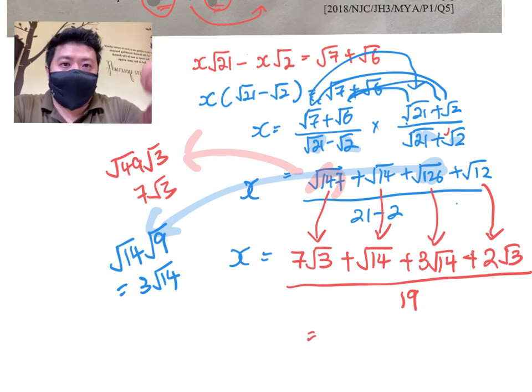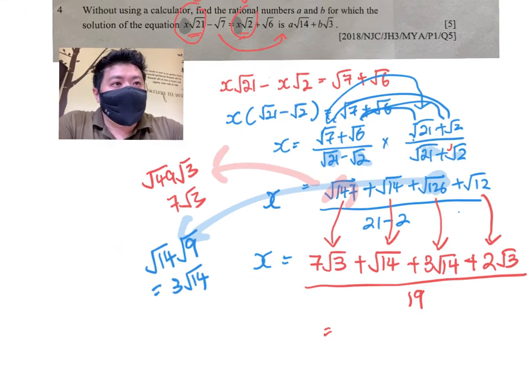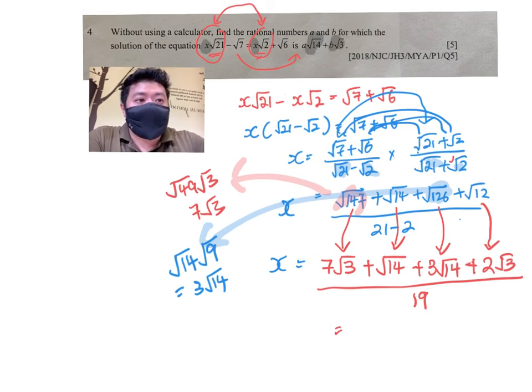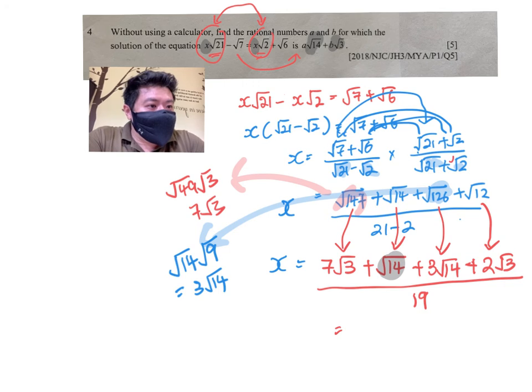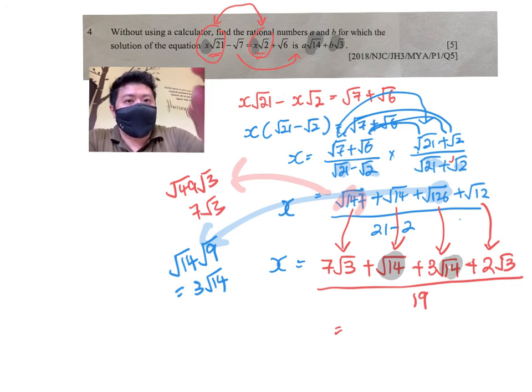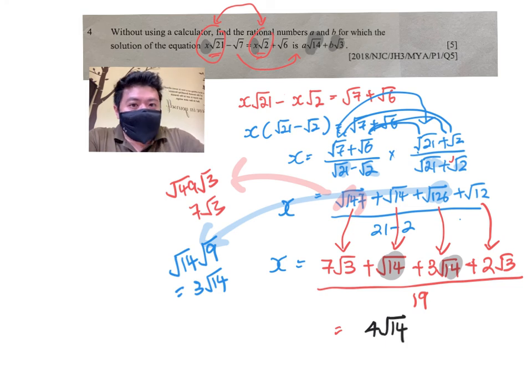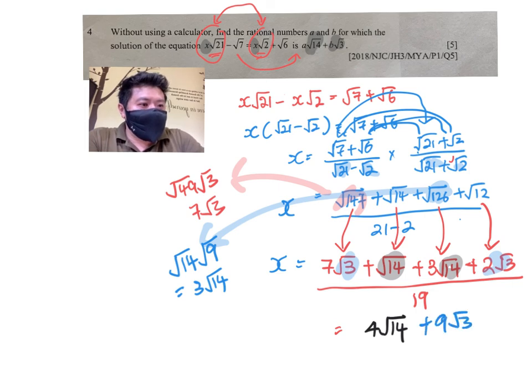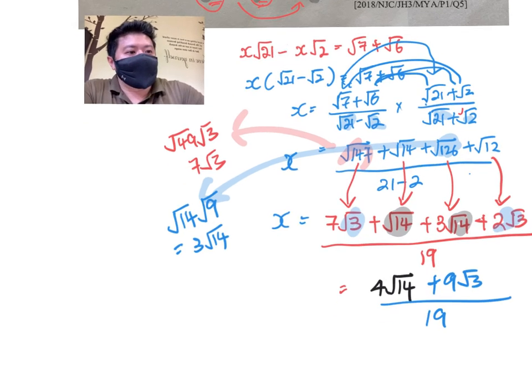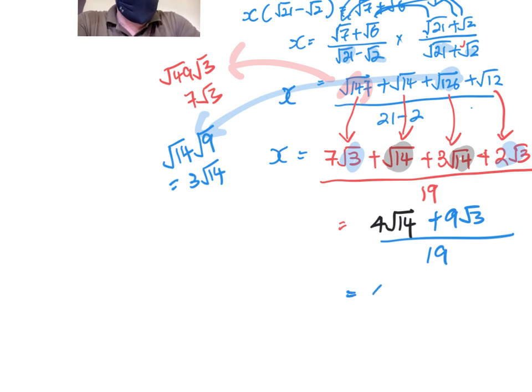Then once you are here, you can see that I'm very close to my endpoint. My endpoint is to get things that contain √14 and √3. So √14 and √14, if you combine them together, you get 4√14. √3 and √3, if you combine them together, you get 9√3.